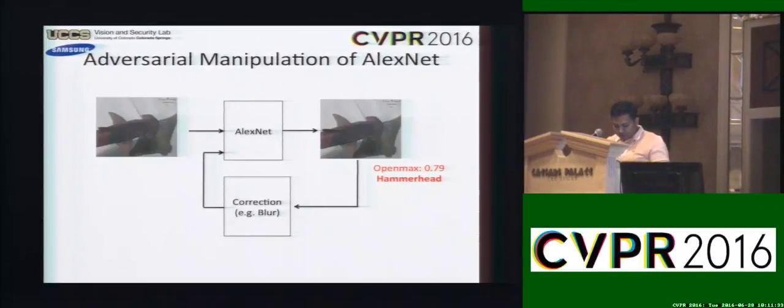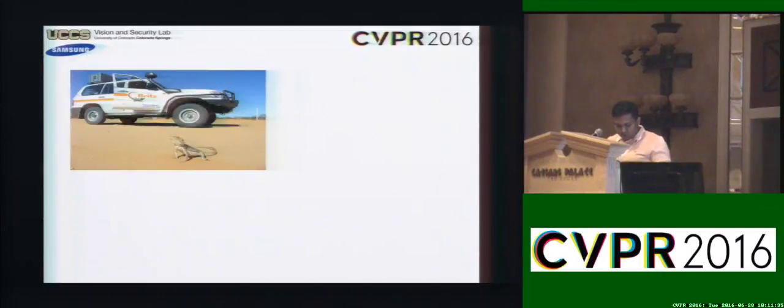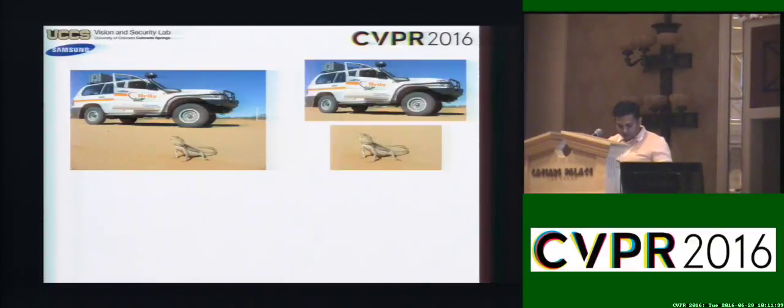As an example of recovery from failure, a Gaussian-blurred version of the image gets classified correctly as hammerhead shark with high probability.